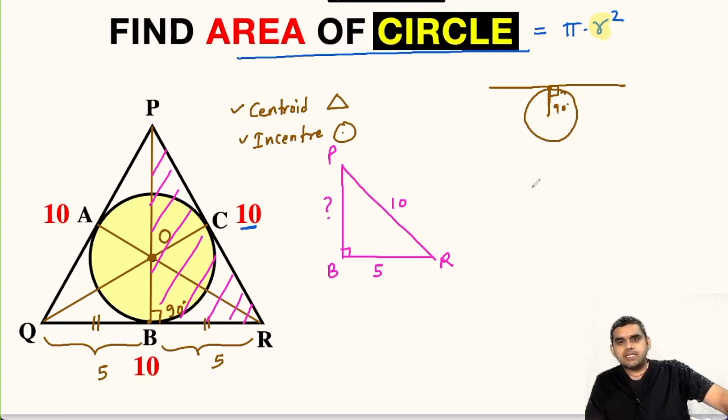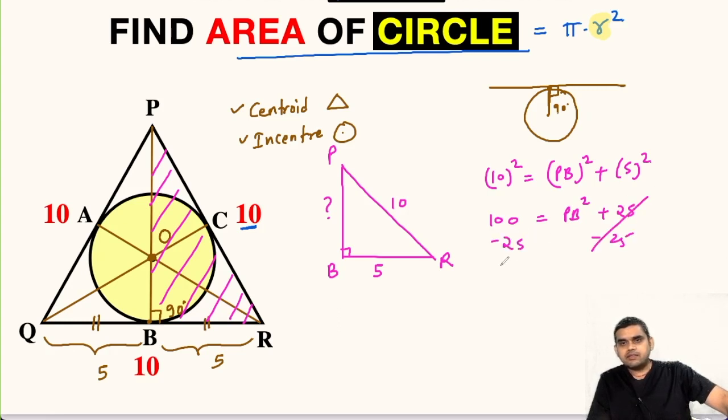So we will use Pythagorean theorem. We can write 10 squared is equal to PB squared plus 5 squared. So this will be 100 equals PB squared plus 25, subtracting 25 from both sides. So this will be 75 equals PB squared. So PB will be equal to square root of 75 which is 5 root 3 units.